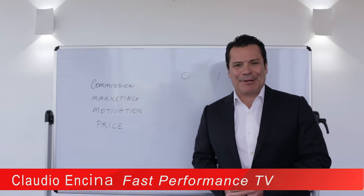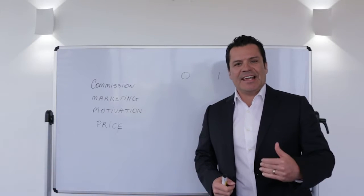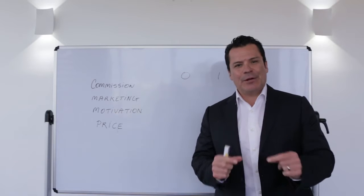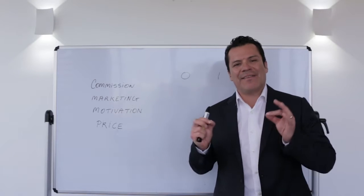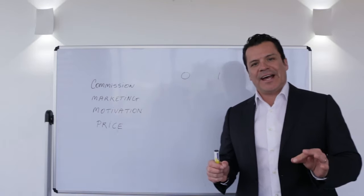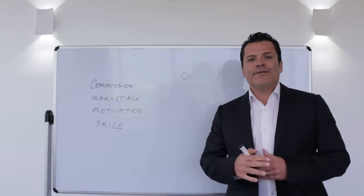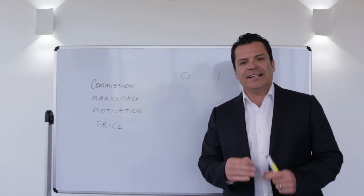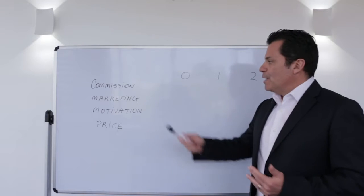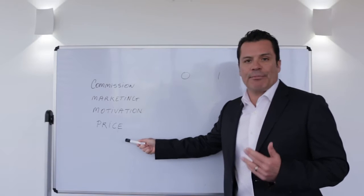Hi everyone, I'm Claudio Encina. Have you ever looked at your listings on your current stock sheet and evaluated them to see exactly where they're at? What I'm going to do today is show you a little exercise so you can start rating your listings and feel like you're making progress with every listing that you currently have. Here are the things you need to look at: Commission, Marketing, Motivation, and Price.